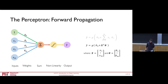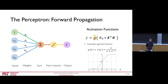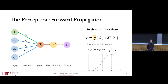You might be wondering what this nonlinear function G actually is. One very popular activation function is the sigmoid function, which takes any real number as input and transforms it to an output between 0 and 1. Because all outputs are between 0 and 1, it's a very popular choice in deep learning to represent probabilities.